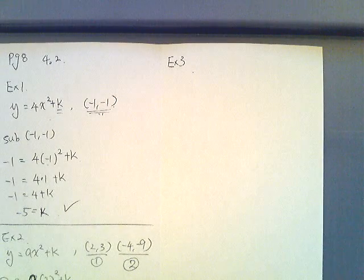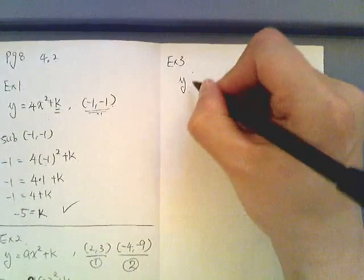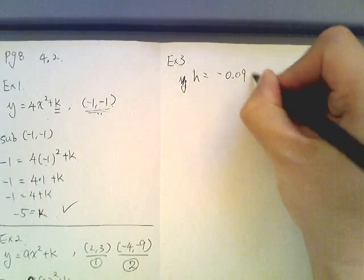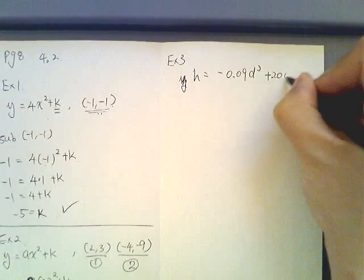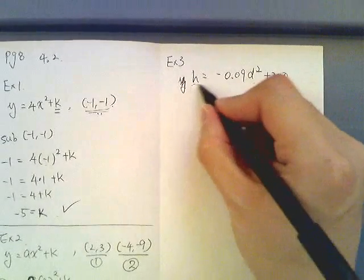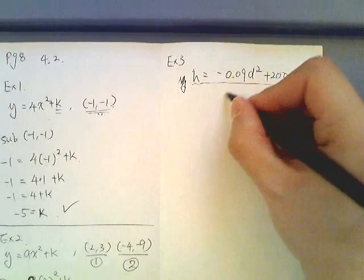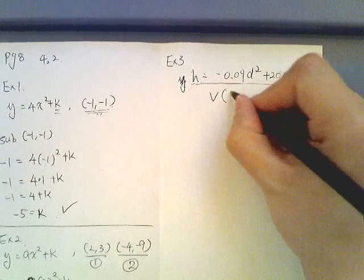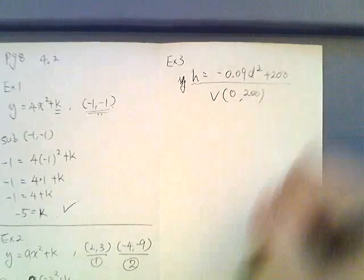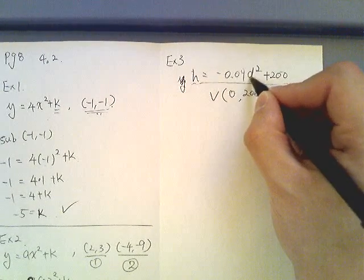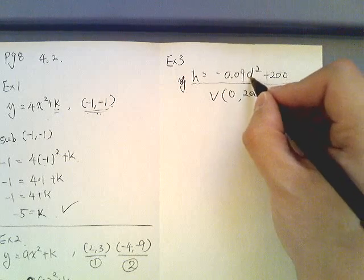Now the last one, let's do example 3. Now this is more of real life related ones, it is actually quite widely used. So we have a graph, we have h equals negative 0.09 d squared plus 200. Now as soon as you see, the first thing you have to extract is the vertex. So the vertex is 0 comma 200.